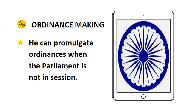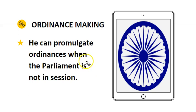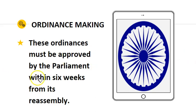Now we will discuss the ordinance-making power. The President can promulgate an ordinance even when a single House is not in session, since a bill normally reaches the President's desk only after being passed by both Houses of Parliament. An ordinance issued by the President has a similar effect to normal law; however, it must be approved by Parliament within six weeks of its reassembly.